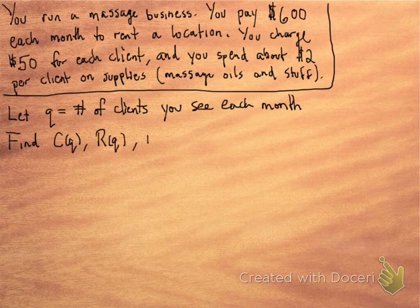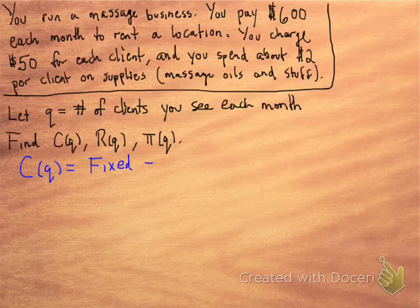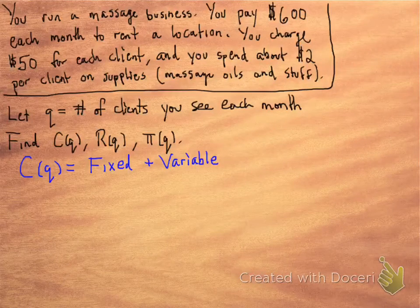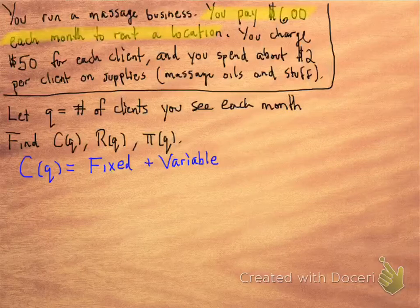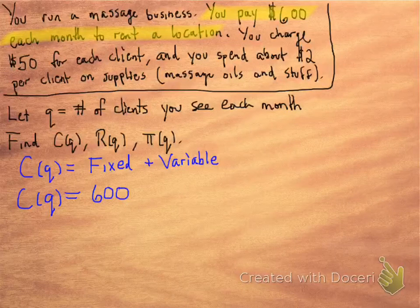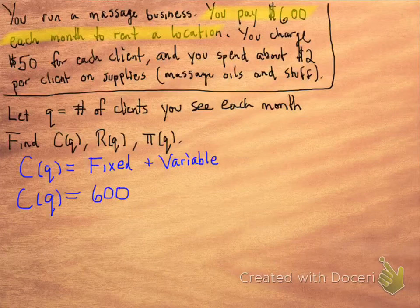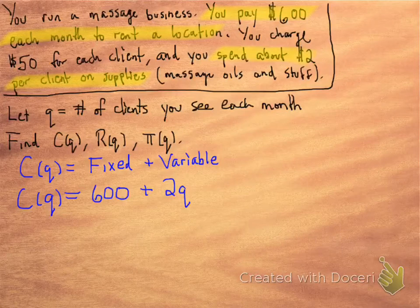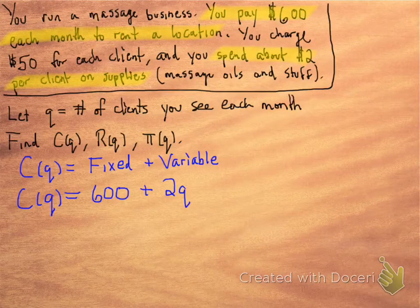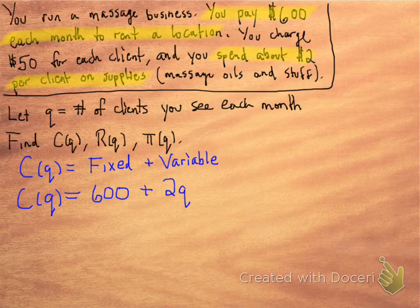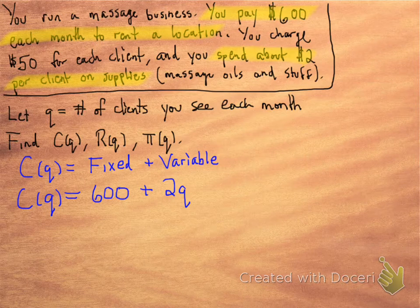So let's find the cost, revenue, and profit functions. If you remember, the cost function is fixed plus variable cost. So we need to figure out what each of those pieces are. The fixed cost is the $600 that you pay each month for rent. The variable cost depends on how many clients you see. You spend $2 per client. So if you only see one client, that's $2. For every additional client, it's another $2. That's why it's 2Q.